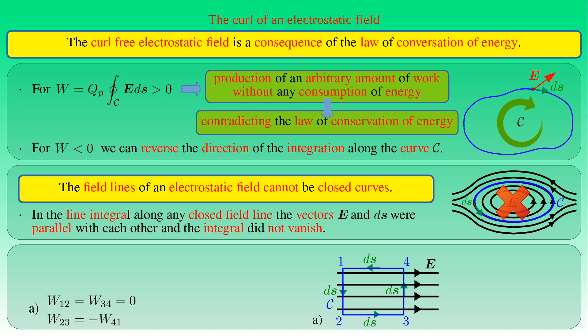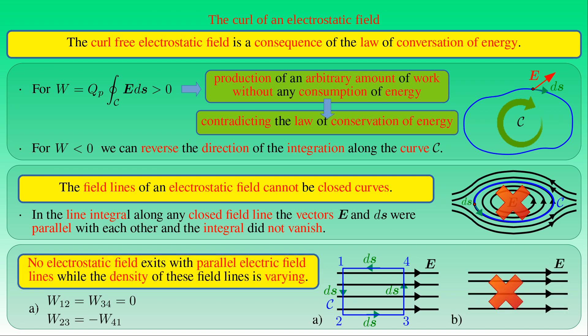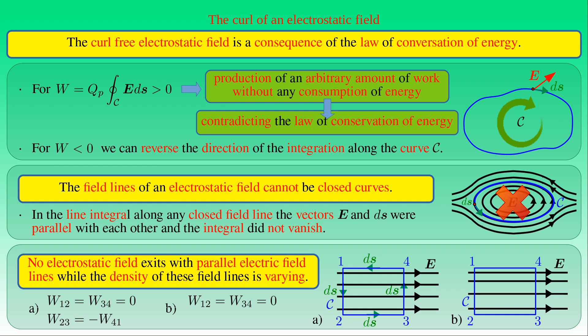Therefore the net work along these sides also vanishes. As a result, we can state that no electrostatic field exists with parallel electric field lines where the density of those field lines varies. While the work along the sides between corners 1–2 and 3–4 would still vanish in a non-uniform field, the non-vanishing line integrals along the sides between corners 2–3 and 4–1 parallel with the field lines would not cancel, since the magnitude of E along the side between corners 1 and 4 would differ from that along the side between corners 2 and 3. Therefore, a non-uniform electrostatic field with parallel field lines cannot exist.